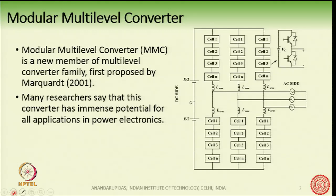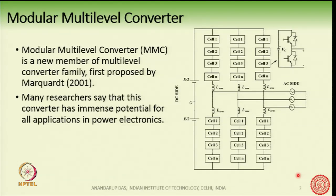For example, cell 1, cell 2, cell 3, up to cell N — these are all connected in series. The principle of this series connection of low-voltage cells in order to produce a high voltage is also applicable for the MMC.